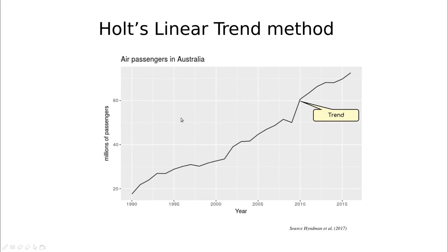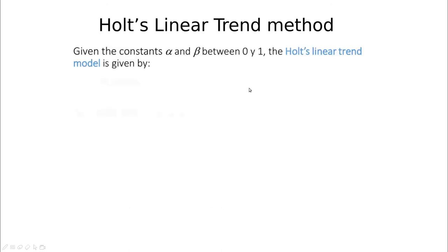Looking at air passengers in Australia — a dataset we've worked with before — we can see trend and seasonality. This trend is clearly increasing over time, so it's a pity to stop here and produce a flat forecast. Holt had a brilliant idea: define two series, one for the level and one for the trend.